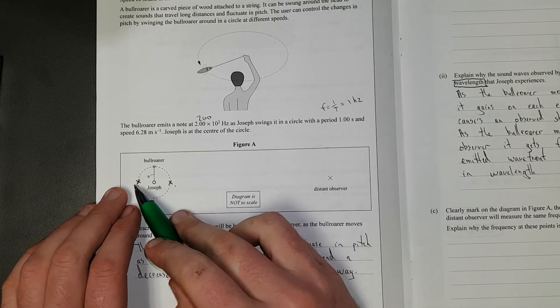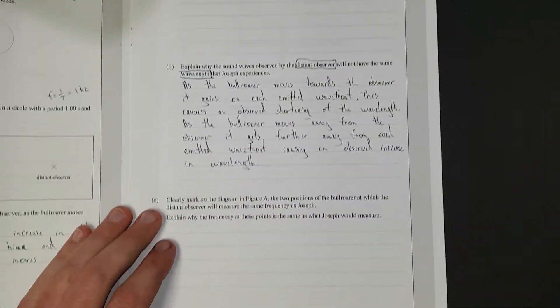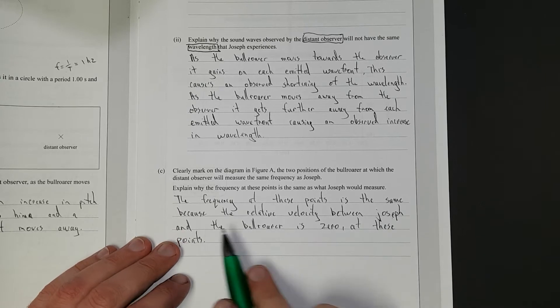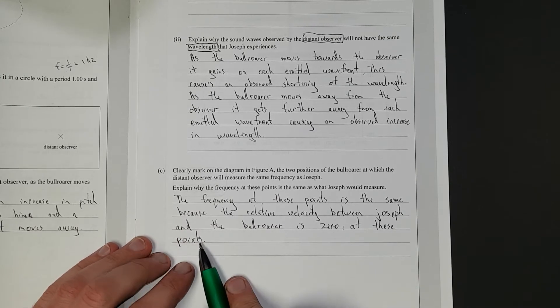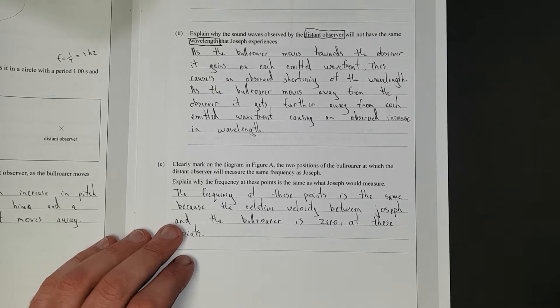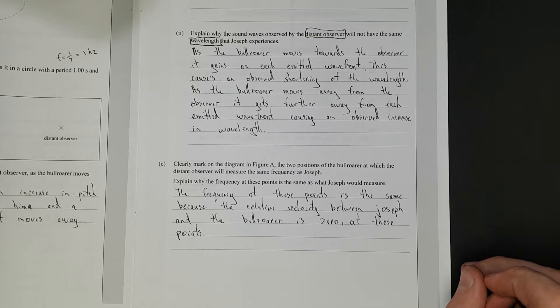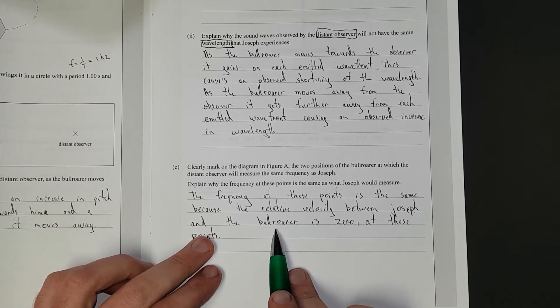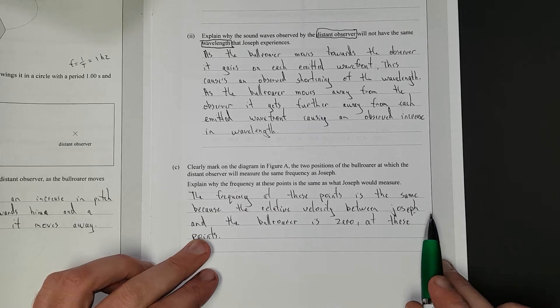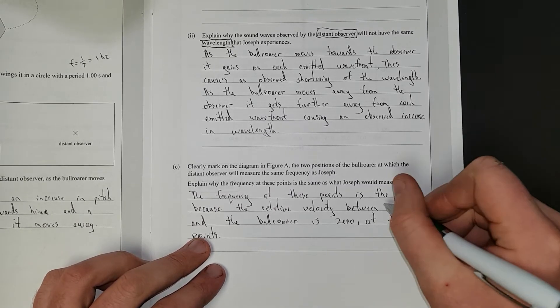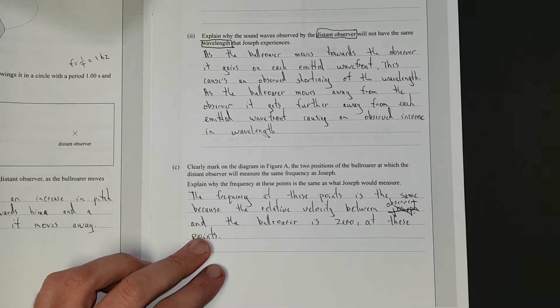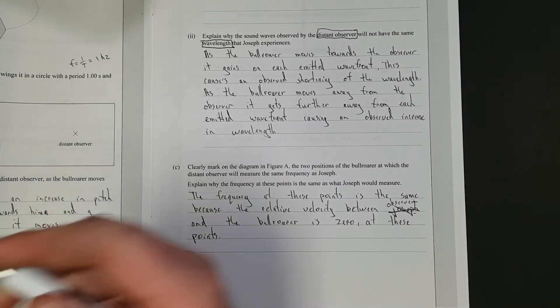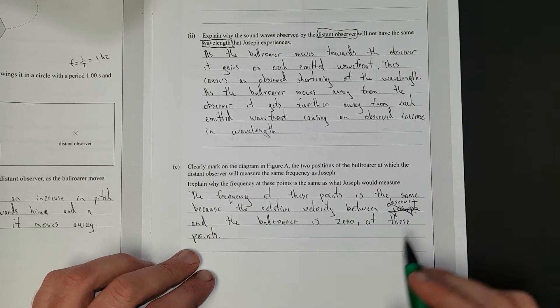You got merit if you could explain it. Here and here, the bullroarer isn't moving away or towards the distant observer. As I said, the frequency at these points is the same because the relative velocity between the observer and the bullroarer is zero at these points. I've kind of double stated it, but you got to really drill it home to the examiner. Between the observer and the bullroarer is zero at these points because the relative velocity for Joseph is always zero.